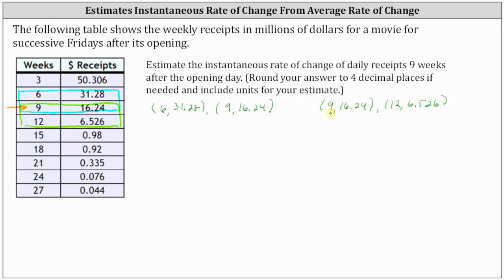To estimate the instantaneous rate of change of daily receipts at nine weeks, we'll average these two average rates of change. The average rates of change equal the slope of the secant lines passing through the two points given by the ordered pairs. In this case, the slope equals the change in receipts divided by the change in weeks. We'll label each set of ordered pairs as W₁, R₁, W₂, and R₂.